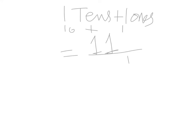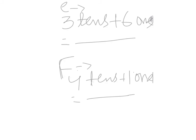Part e is three tens plus six ones. Three tens equal thirty and six ones equal six, so thirty plus six equals thirty-six. We will write here thirty-six.